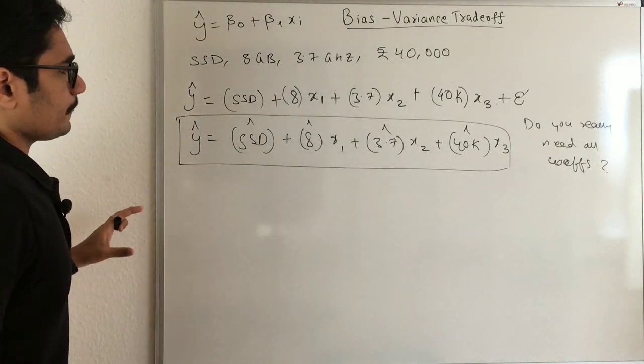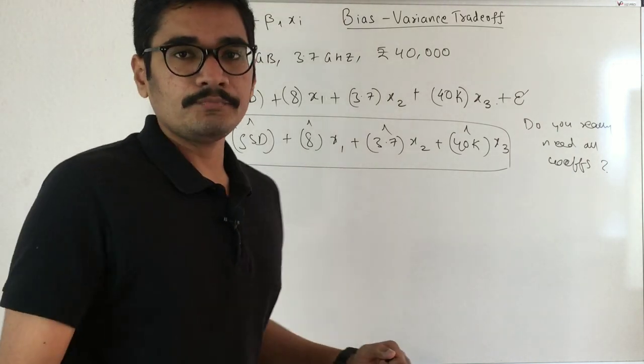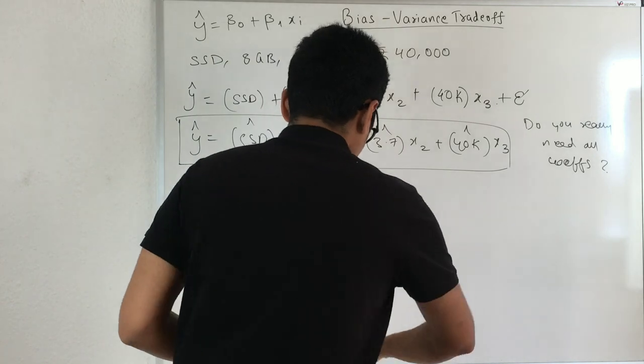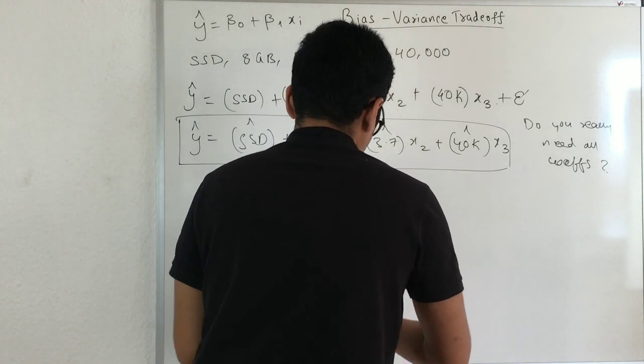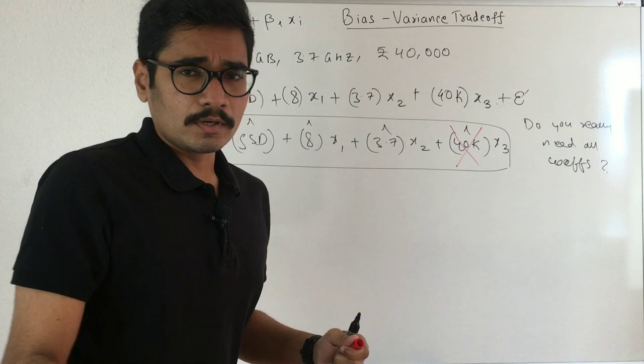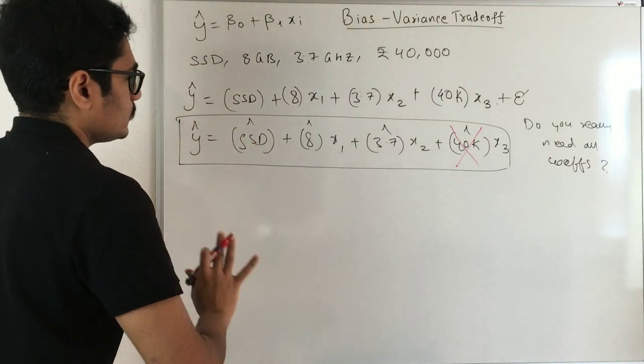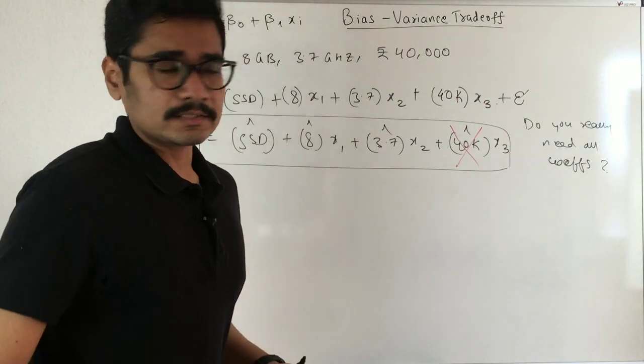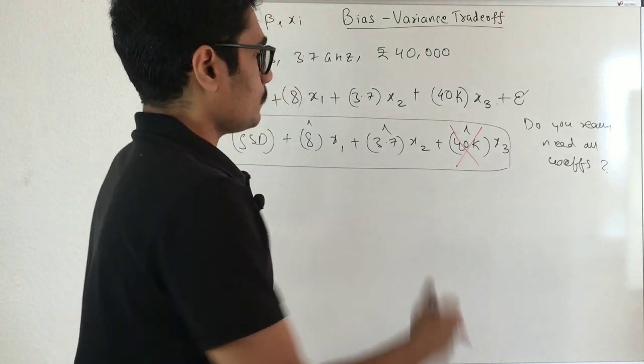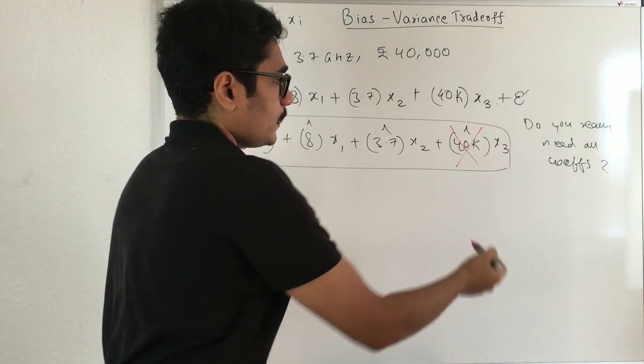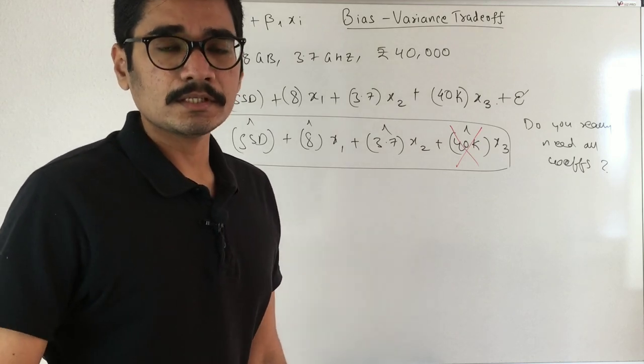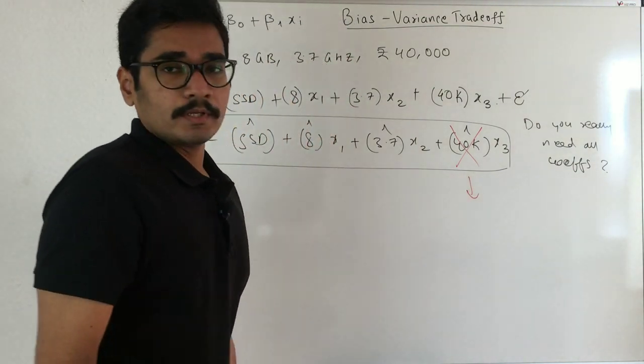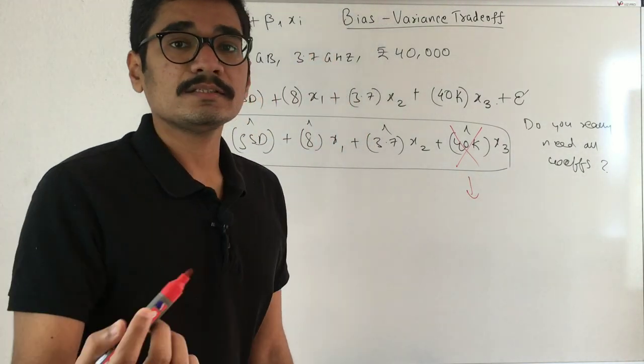How significant is it for you to drop that input feature or predictor variable? Say, for example, if I drop this price, I'm not concerned about the price. I want SSD, 8GB RAM, 3.7 gigahertz, and I'm least concerned with the price range. Dropping a particular input feature requires justification why you need to drop it.